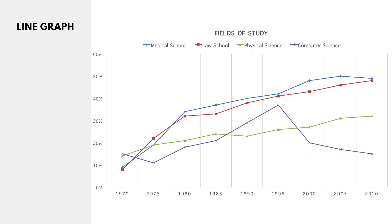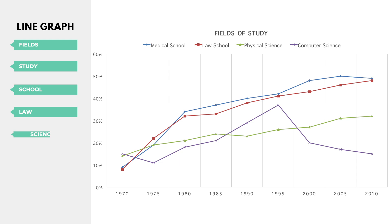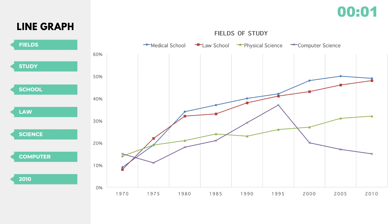Here we have a line graph — a typical one we might see on the exam. Does it matter what we pick? Again, no. If you're comfortable saying numbers, pick all the years, but most people are not comfortable with numbers, so avoid the years. These are the words I would pick: fields, study, school, law, science, computer, and 2010 — just to throw in a number. All of these are nouns, but it doesn't really matter — take what you're comfortable with.